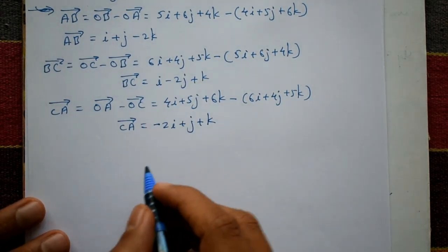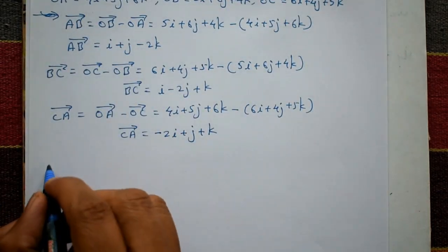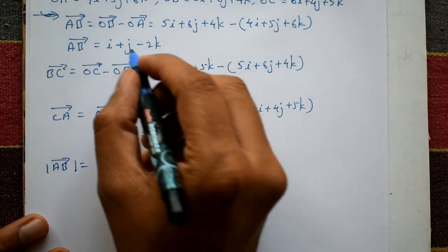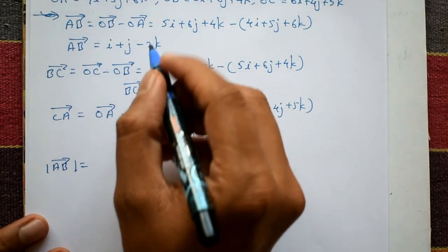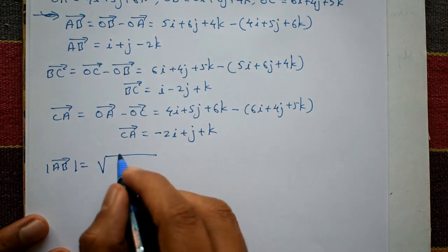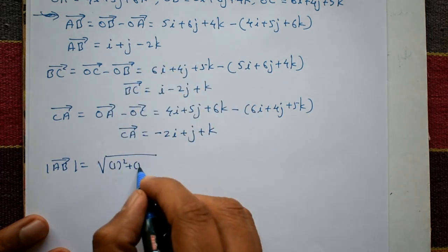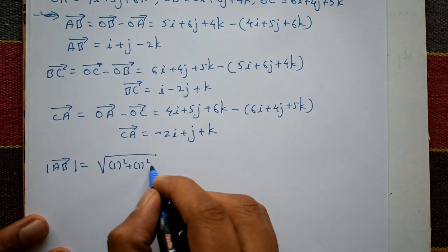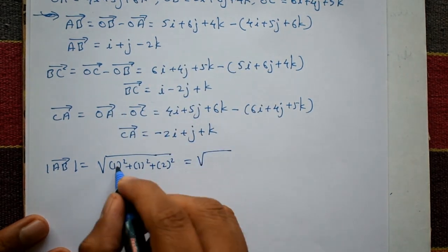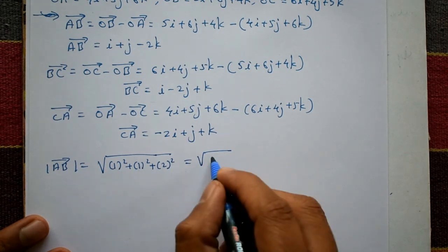Now show that it is an equilateral triangle. Take the magnitude of AB. The vector is i + j - 2k, so the magnitude is the square root of (coefficient of i squared plus j squared plus k squared), which is √(1² + 1² + (-2)²) = √(1 + 1 + 4) = √6.